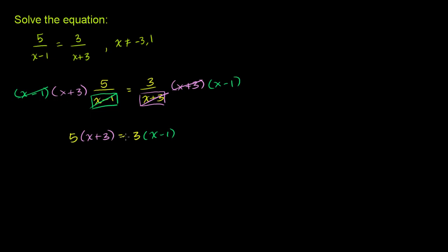But now, this is a pretty straightforward linear equation. We can just distribute the numbers and get the x's on one side and just solve for things. So we have 5 times x plus 3. That's the same thing as 5x plus 15 when you distribute the 5. And that's going to be equal to 3x minus 3 when you distribute the 3.